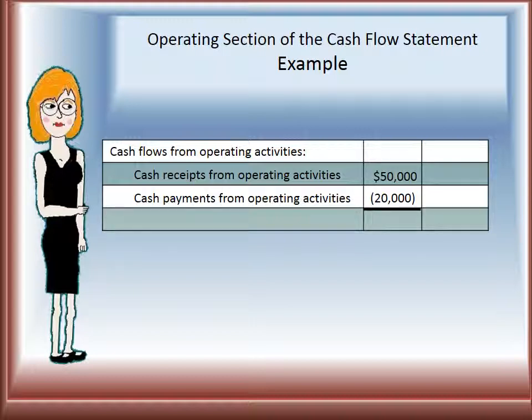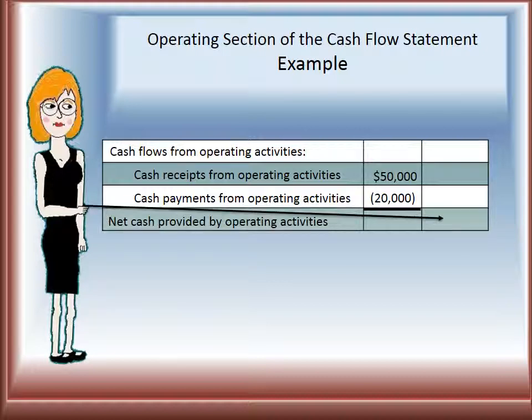Now we will take the $50,000 minus the $20,000, and this will give us net cash provided by operating activities, which we will put in the far right-hand column.